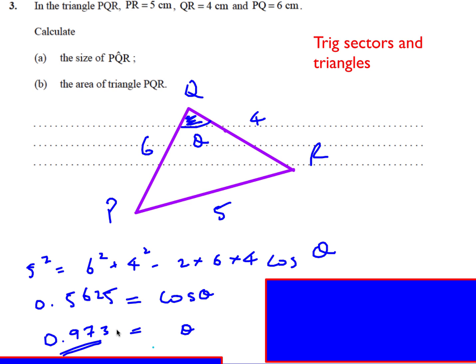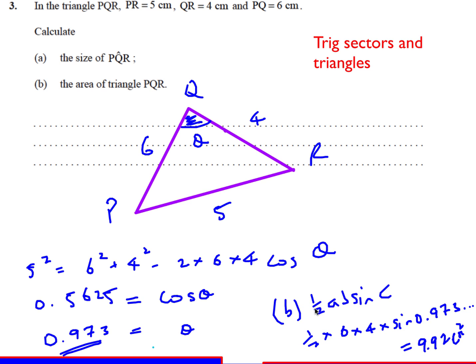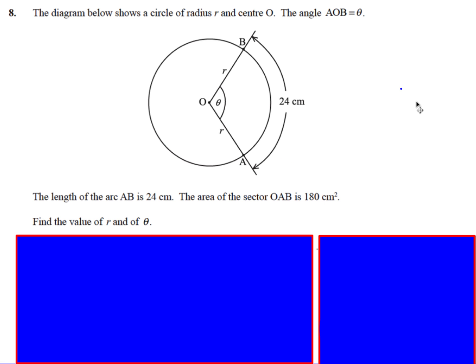For part B, the area of the triangle: using the formula ½ab sinC, that's ½ × 6 × 4 × sin(0.973). Using the full unrounded answer gives an area of 9.92.